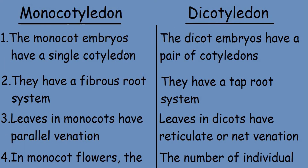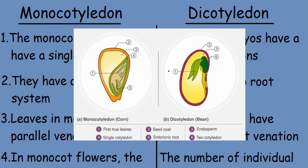Let's look at a diagram. On the left we have the monocotyledon corn and on the right we have the dicotyledon bean seed. For monocotyledon, there is a single cotyledon present, and for the dicotyledon seed, there are two cotyledons present.